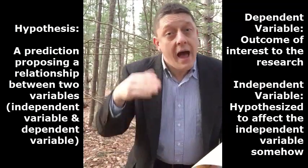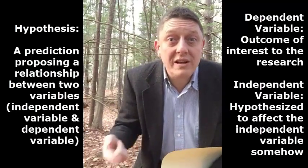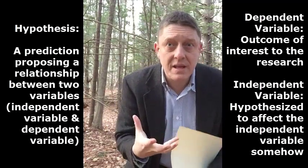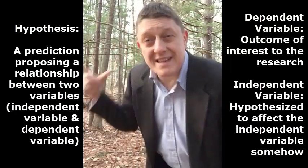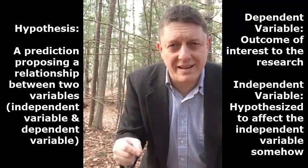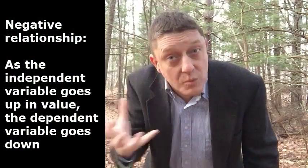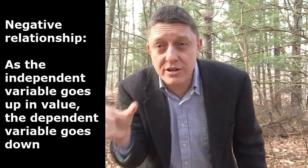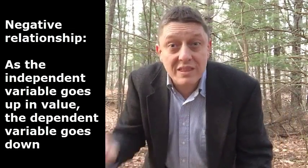That's my dependent variable — it's a characteristic of a tree: how many other trees are within three feet of it? But I want to be able to try to predict that. My prediction is that an independent variable, which is the diameter of the tree's trunk, will be negatively related to my dependent variable, the number of trees around it. A negative relationship means that as one goes up, the other goes down. In other words, I'm predicting that as the diameter of a tree trunk gets bigger, there will be fewer trees within three feet of it.